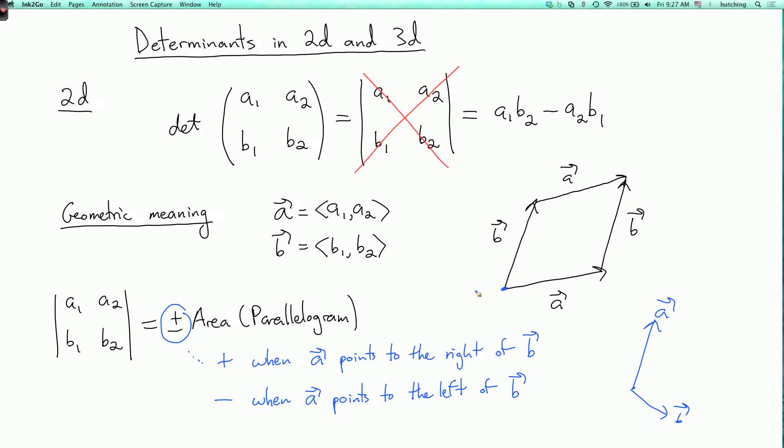Now let's talk about three-dimensional determinants. So if I have a 3x3 matrix, a1, a2, a3, b1, b2, b3, c1, c2, c3, the determinant of this, which I can denote just by putting vertical bars around the 3x3 matrix,